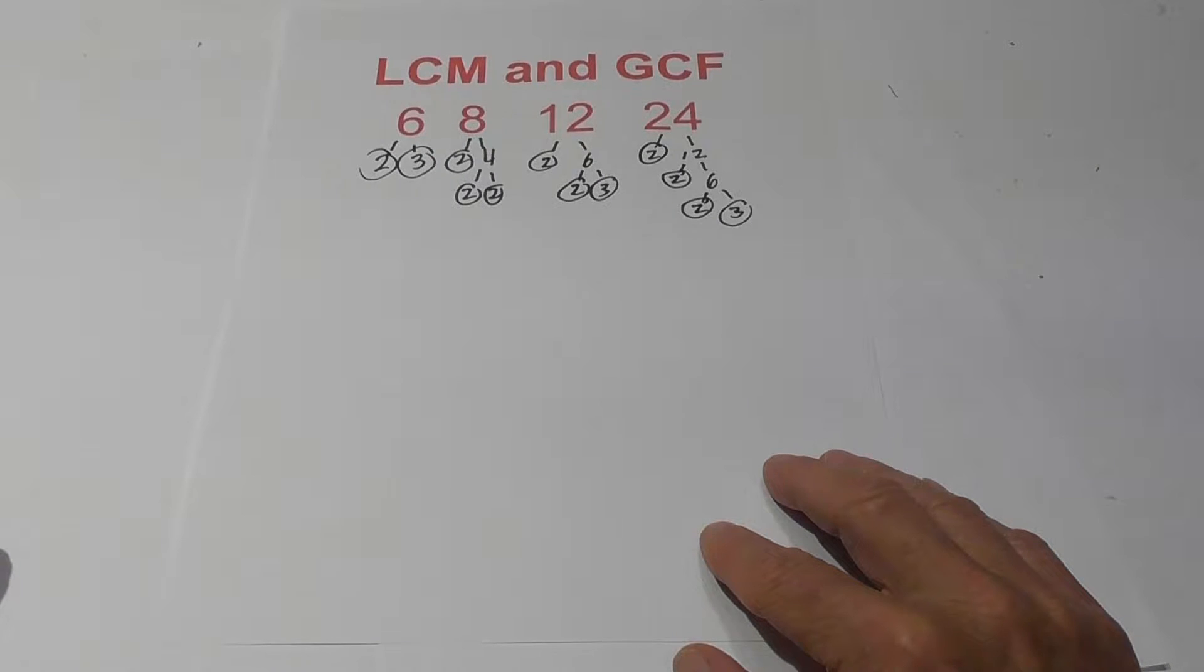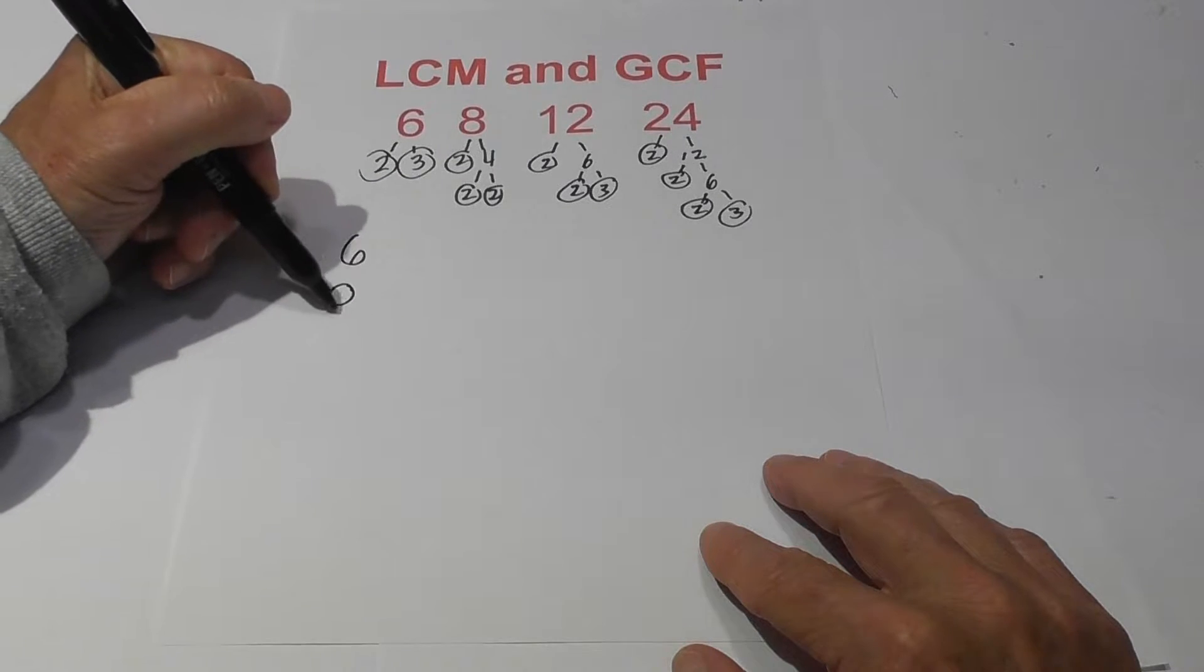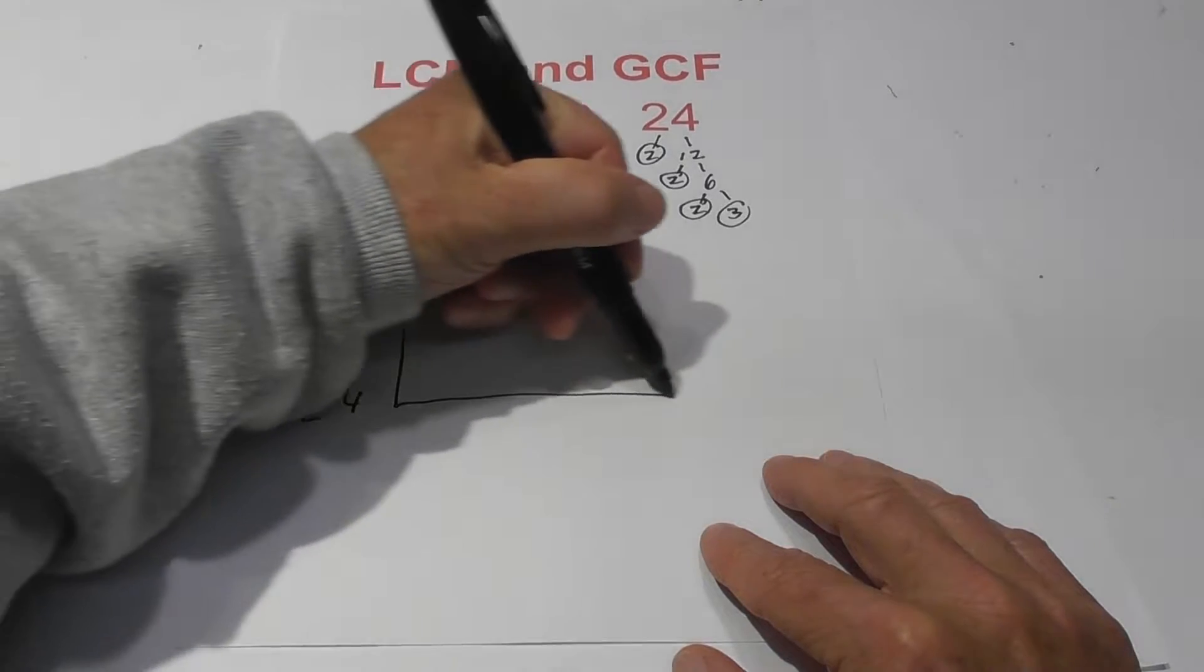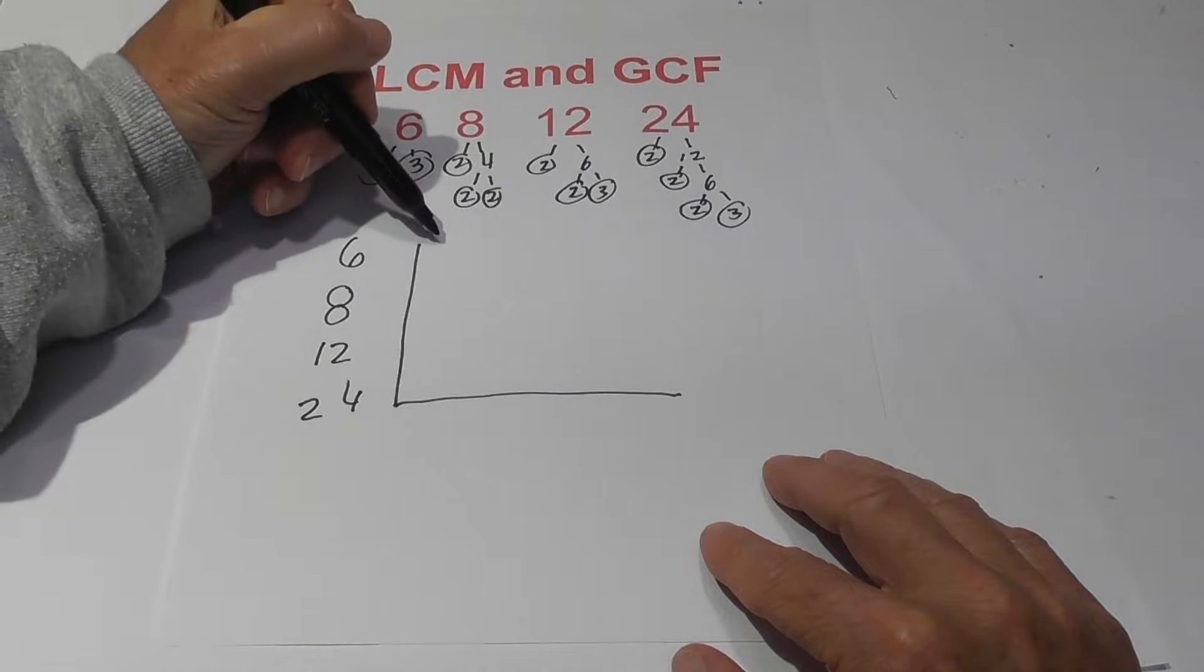Now this next part is what I think makes it really easy. You create a little chart. So I'm going to write the numbers six, eight, twelve, twenty-four. This just keeps it nice and organized. You don't have to really remember a lot of rules.